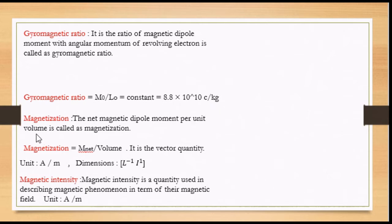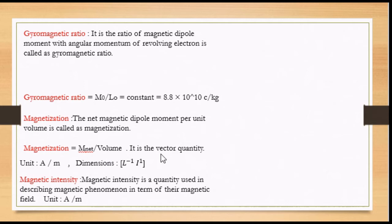Next, we must know what Magnetization is. Magnetization is the net magnetic dipole moment per unit volume, that is M-net upon volume. This is a vector quantity and the unit of magnetization is Ampere per meter. The dimension of magnetization is L⁻¹ I¹.